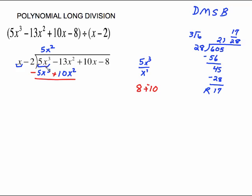5x cubed, negative 5x cubed. These things better cancel out or you've done something wrong. This first part goes away. We just have this arithmetic right here. Negative 13x squared and 10x squared is negative 3x squared. The next thing we want to do is bring down one more term and then we begin again.